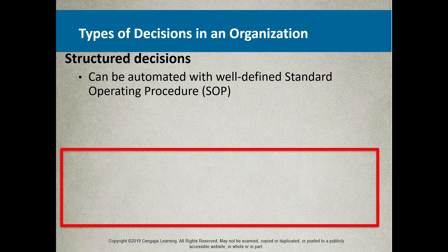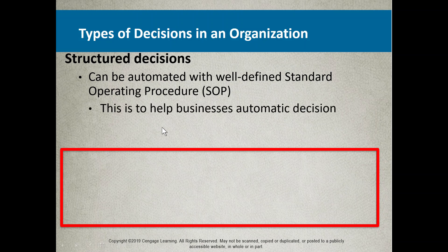SOP — Standard Operating Procedure — is an acronym you need to know. SOPs help automate decisions. If you don't have a standard operating procedure, decisions will be semi-structured or unstructured, made based on individuals' knowledge of how to proceed — and they could make costly mistakes. Standard operating procedures are one of the easiest ways companies can create scaffolding or structure around how decisions are made.